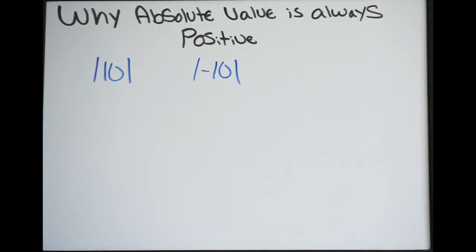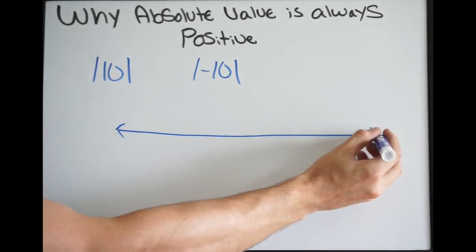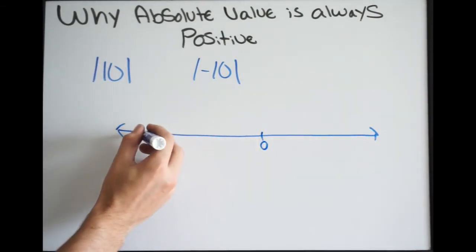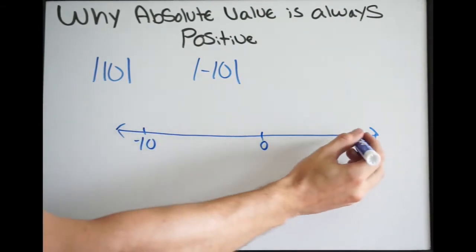You can go back to a number line for more of a visualization. If we just put both of these on the number line, so this is 0, we'll say this is negative 10, this is 10.